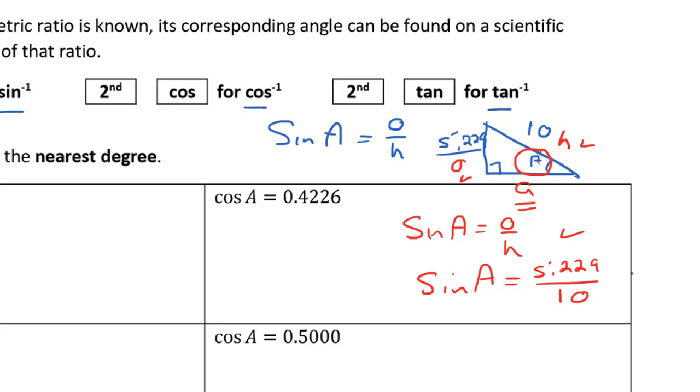Sine of angle A equals the opposite, 5.229, over the hypotenuse, 10. If we get our calculators out, that equals 0.5229. Because I know the ratio of the opposite over the hypotenuse equals 0.5229, I can use my trig ratios to calculate the measure of angle A.